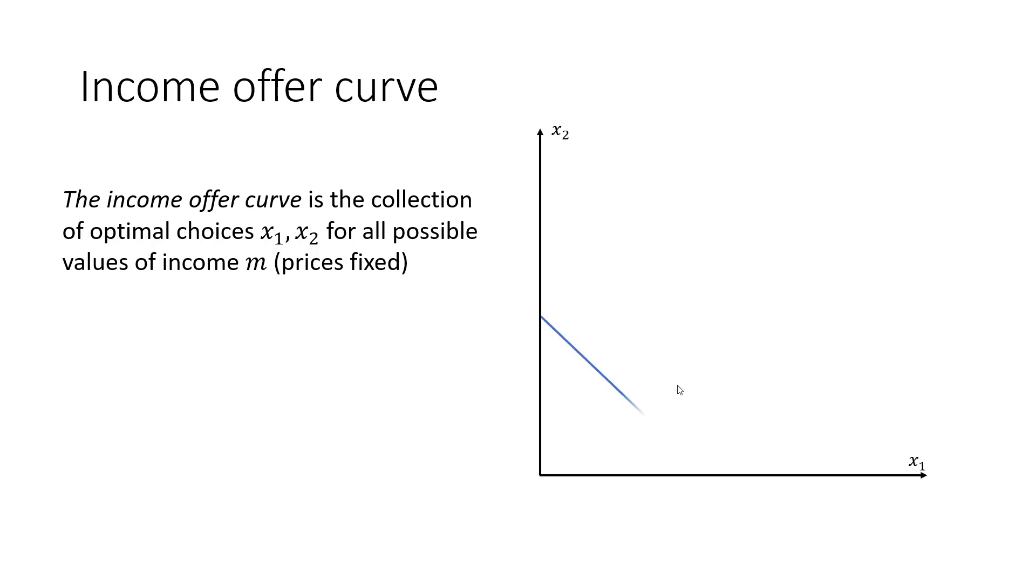In this picture I have identified the optimal bundle at some given prices and income. Let's identify the optimal bundle for a higher level of income. Right here, both goods are normal in this example.